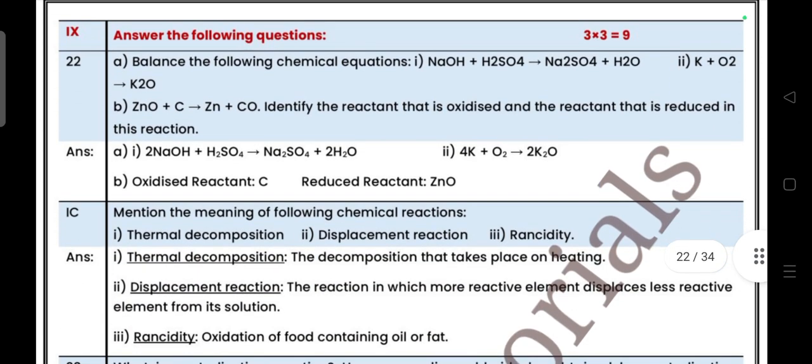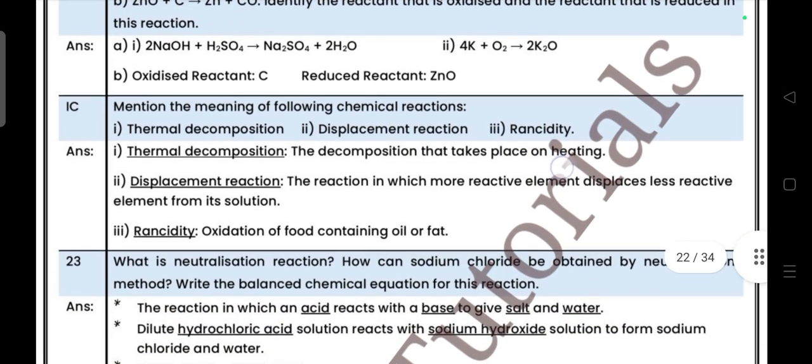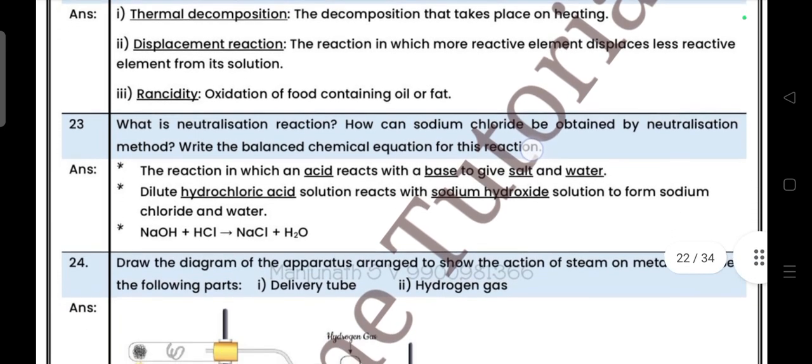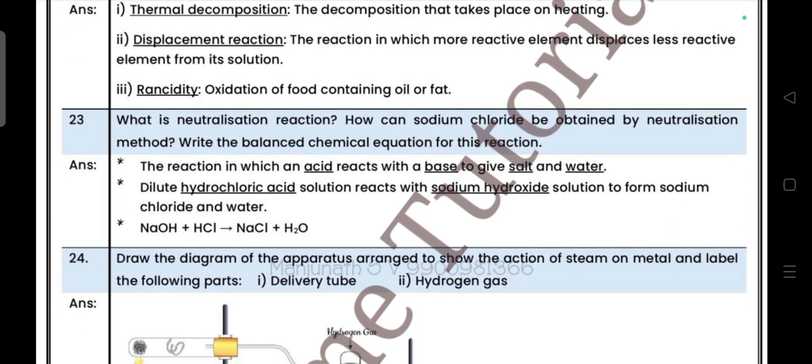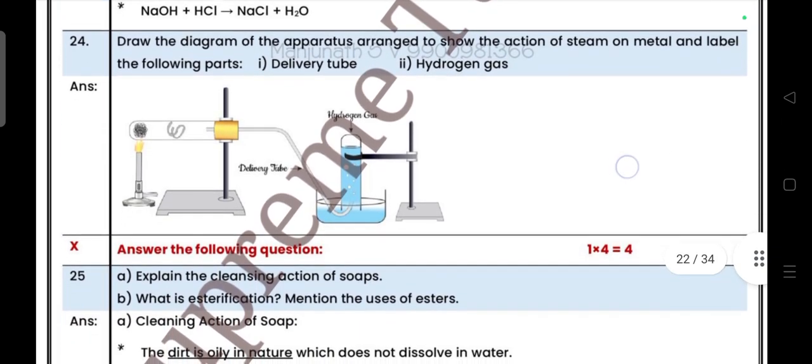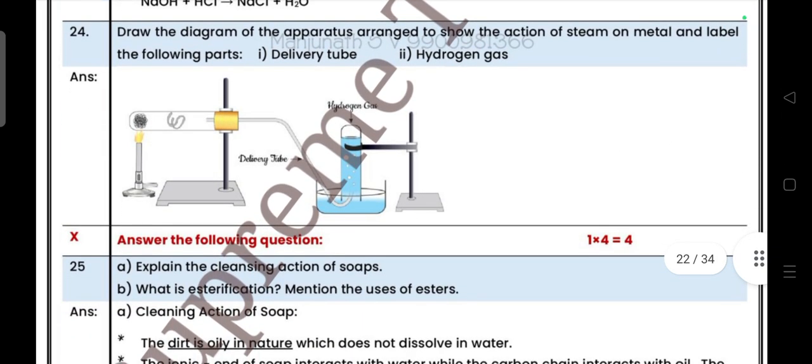Next come to next main, three mark question. Balance the following chemical equations. So here three questions are there, you have to balance three. Next one, mention meaning of following chemical reaction. What is thermal decomposition, displacement reaction, rancidity? So give definition of these three. Then what is neutralization reaction? How can sodium chloride be obtained by neutralization method? Write the balanced chemical equation of this reaction. Next one, draw the diagram of apparatus arranged to show the action of steam on metal and label the following parts, delivery tube and hydrogen gas.